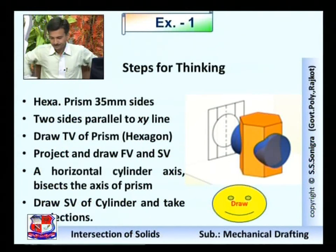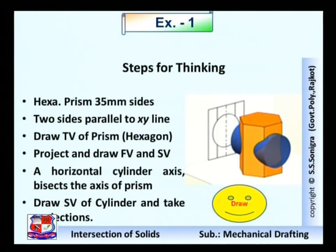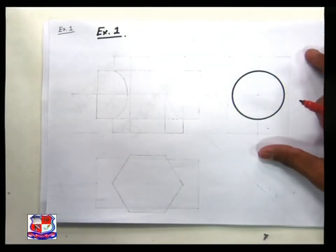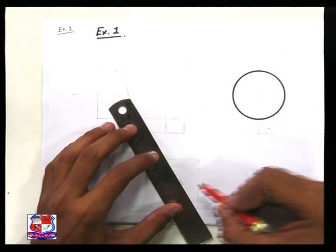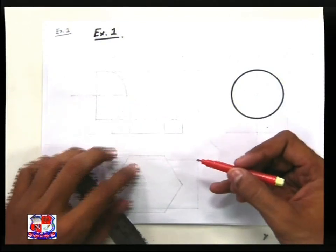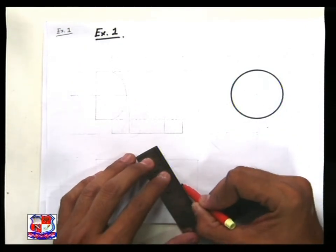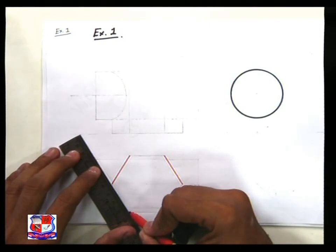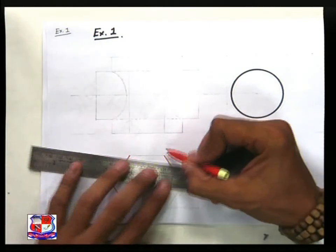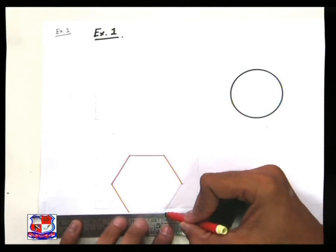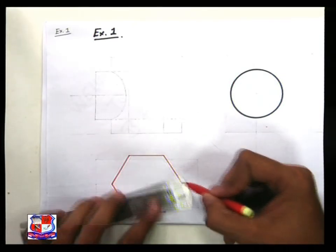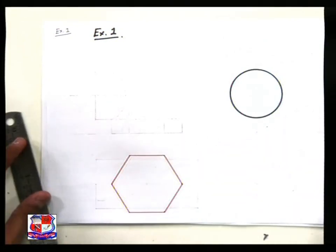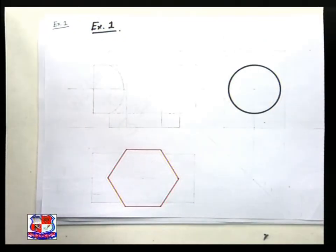Now let us draw this problem on the drawing sheet. First we draw the hexagonal prism — that is, a hexagon of side length 35 mm — such that two sides are parallel to the XY line. This hexagon, having two sides parallel to the XY line, represents the top view of the hexagonal prism.